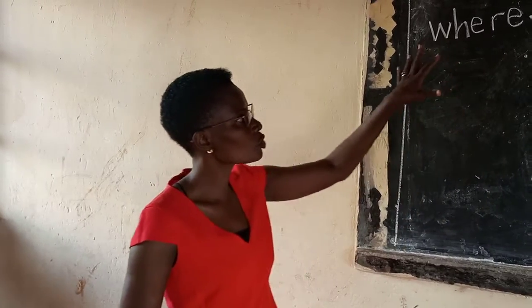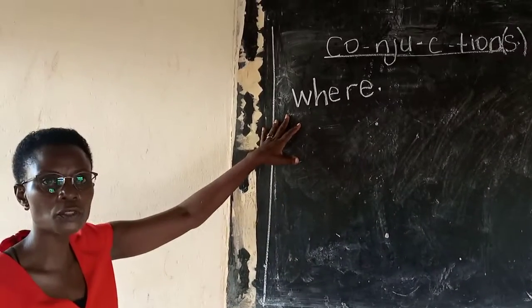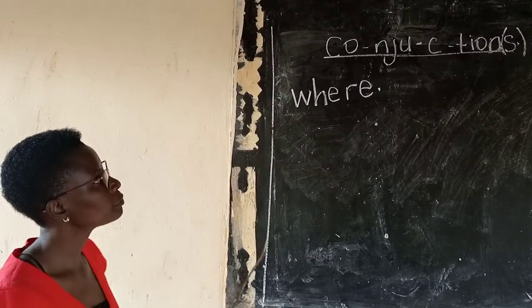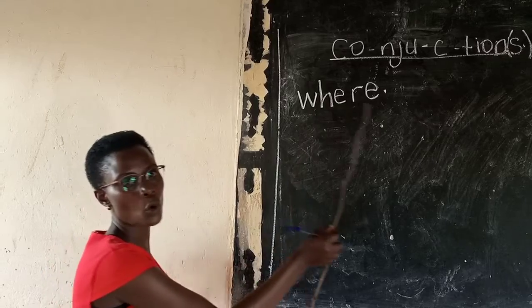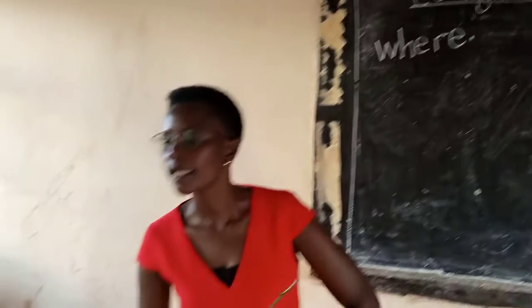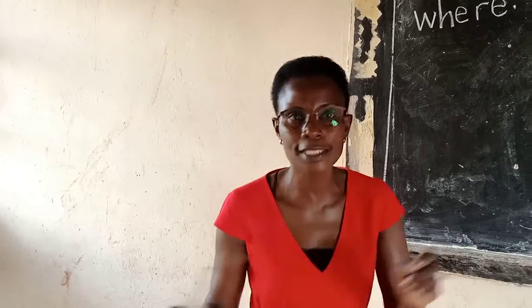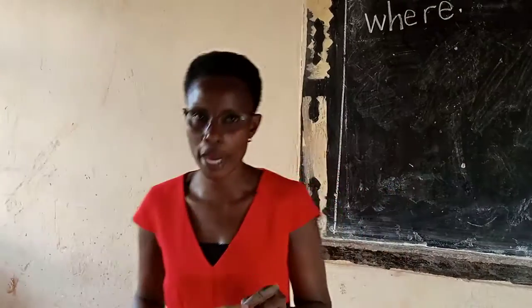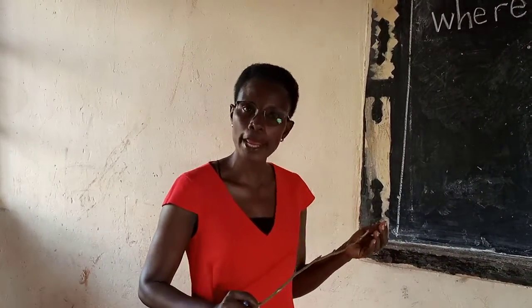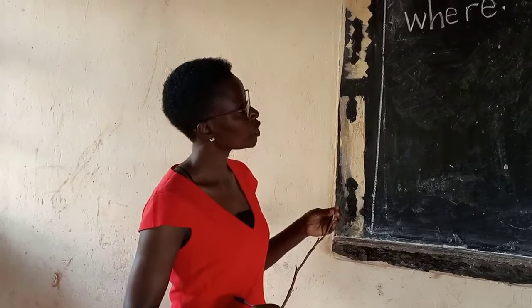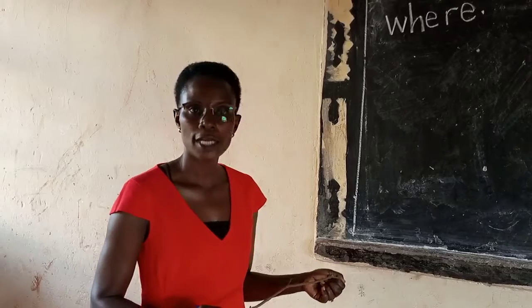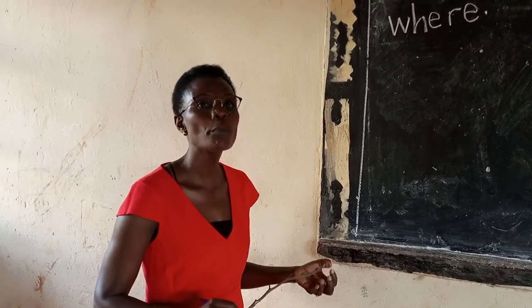Very good. And so today we are going to look at another conjunction. Read with me: "where." Everybody say "where." Conjunction "where." When we use conjunction "where" — we use conjunction "where" when we are joining sentences related to places.